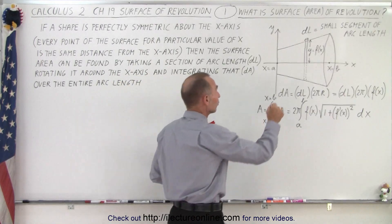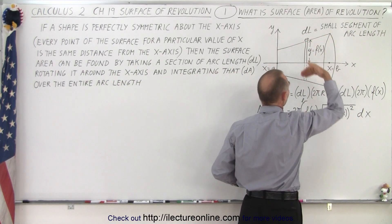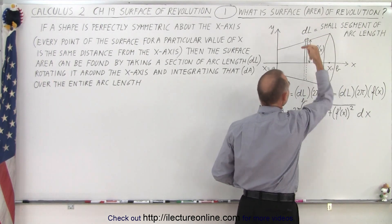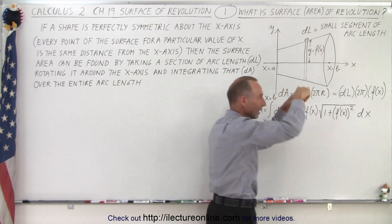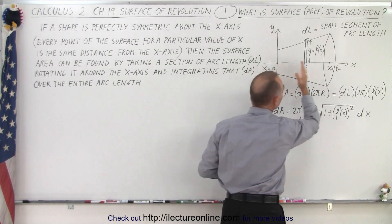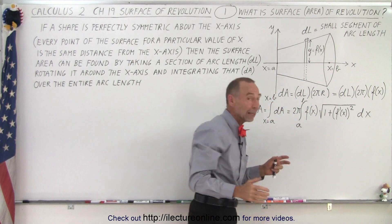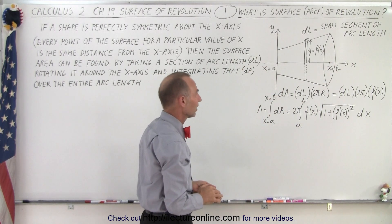Essentially, we take a small little dl along the arc, along one of the sides of our volume, we rotate it around the x-axis, we end up with a small strip that is then over the surface of that object, and then we integrate it across the surface from x equals a to x equals b. That will give us the surface area of revolution.